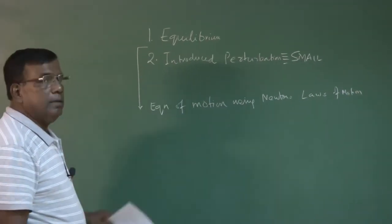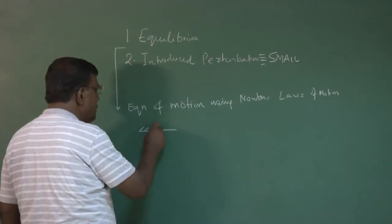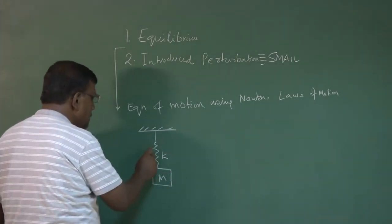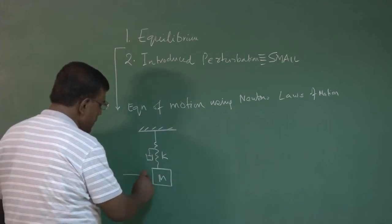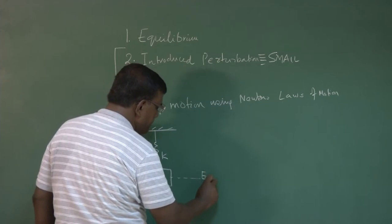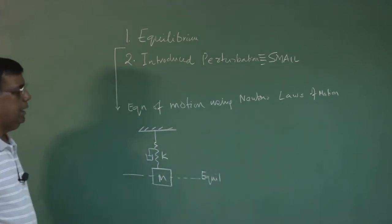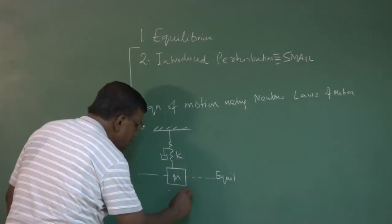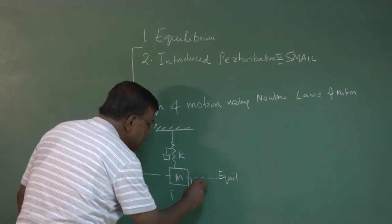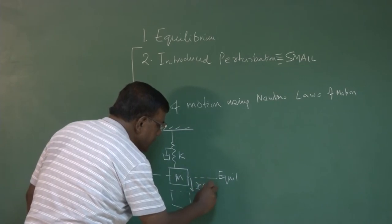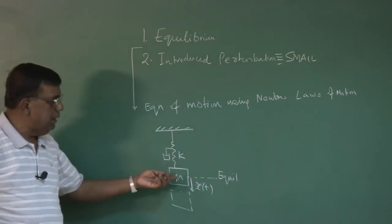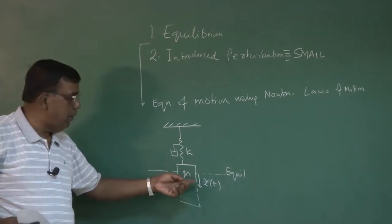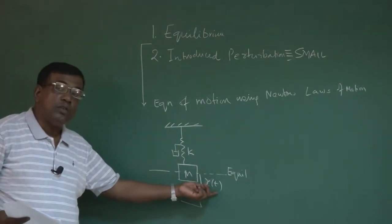These are the primary steps. See, this is the spring, this is the mass and here there is a damper. Then we identify first — this is the equilibrium — that is, net force acting on this mass is 0. Now, we introduce small perturbation, and this x or x(t) is measured from the equilibrium. Since this is one-dimensional motion along the x-axis, x is the perturbed motion variable.